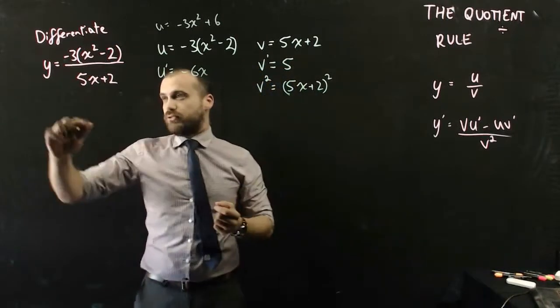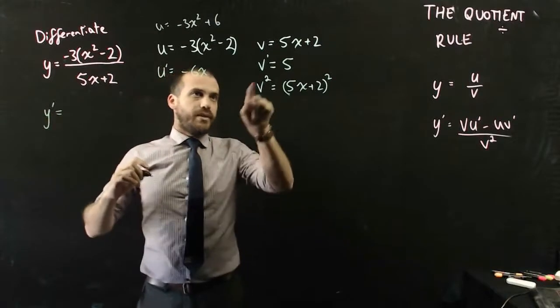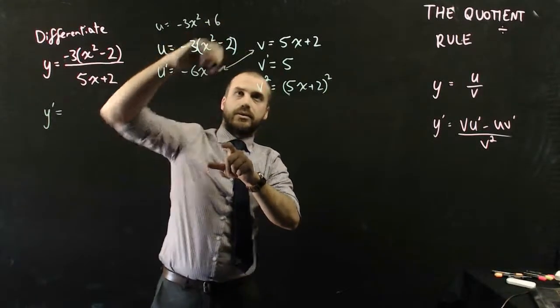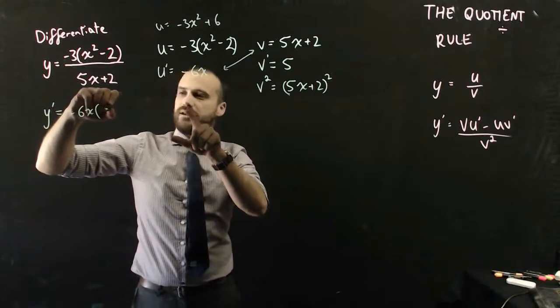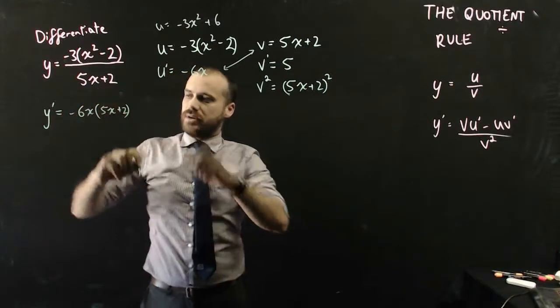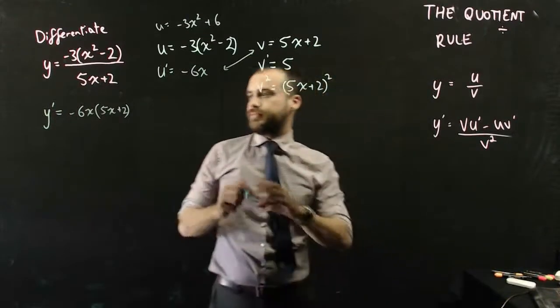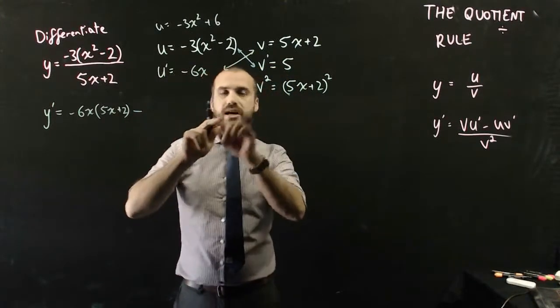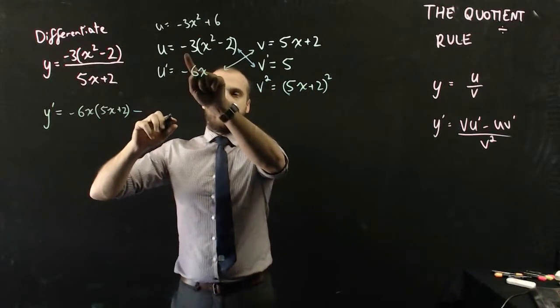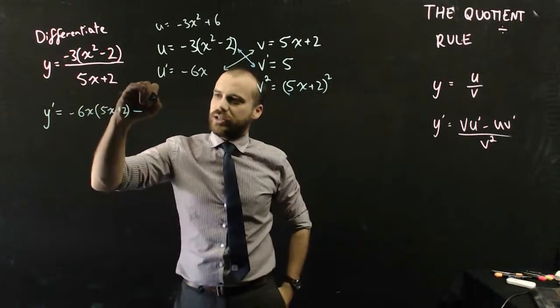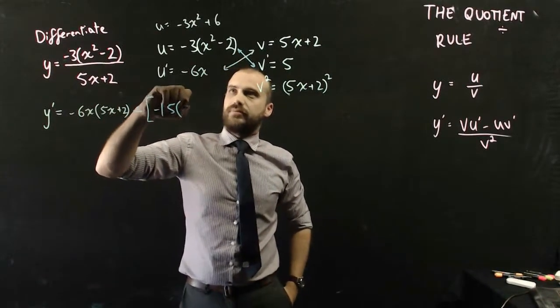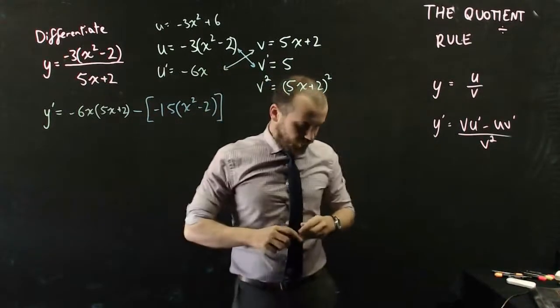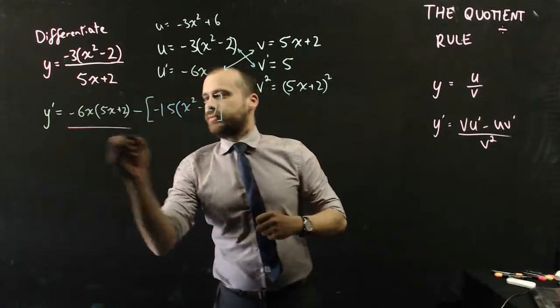It's really just putting it into a formula now. So, y dash equals v u dash. Okay, so I need to multiply those two together. That's going to be negative 6x bracket (5x plus 2). Okay, and then I'm going to subtract. I'm going to put those together because that's u, v dash. So, that's going to be 5 times negative 3, which is negative. I need to be careful because I'm subtracting it. So, minus negative 15(x squared minus 2). And then all of that is going to be divided by v squared.